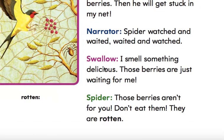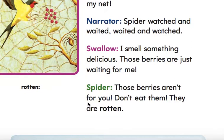Swallow: I smell something delicious. Those berries are just waiting for me. Spider: Those berries aren't for you. Don't eat them. They are rotten.